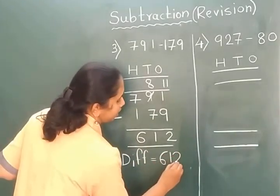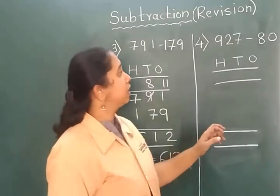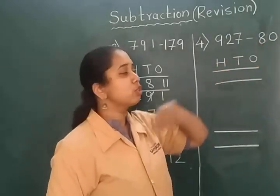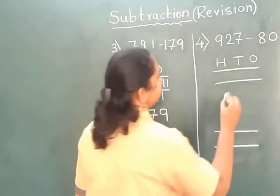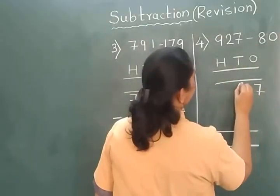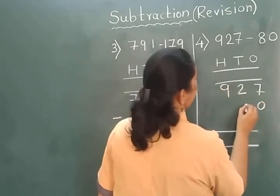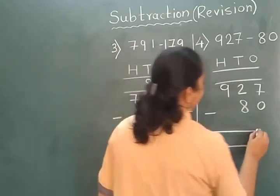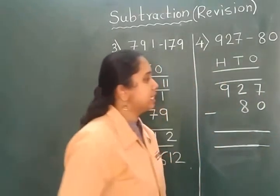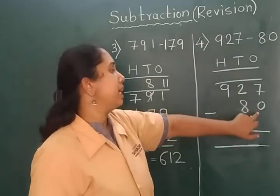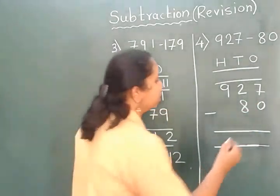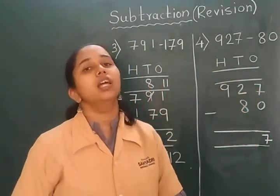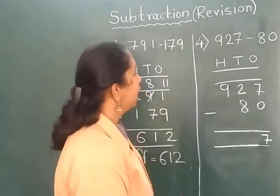Let's see one more example: 927 minus 80. So I will write these numbers first. 7 minus 0 becomes 7 because whenever we subtract 0 from any number, answer remains itself.